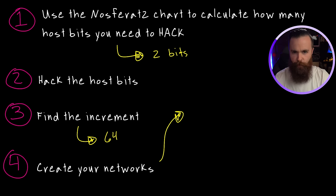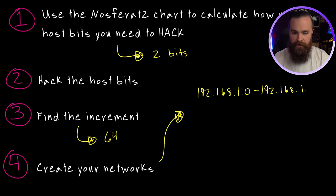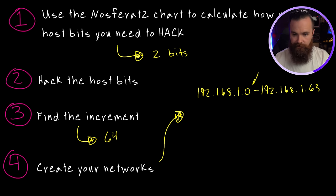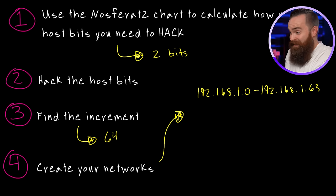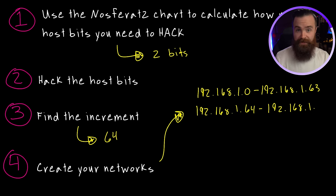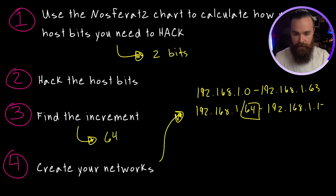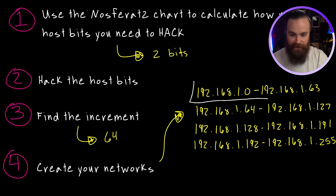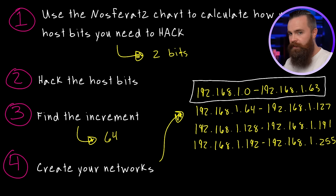64 is what we'll use to determine the size of our networks and their ranges. Let's start with our first network: 192.168.1.0 through 192.168.1.63. If you add 64 to 64 you get 128, but remember we include 64, so the last address is actually 127. Pause the video and fill out the rest yourself. And there they are — our four networks created out of one network using the power of subnetting.